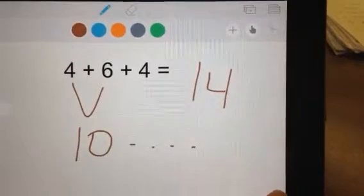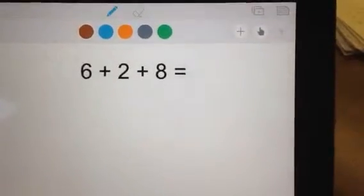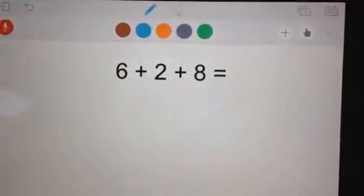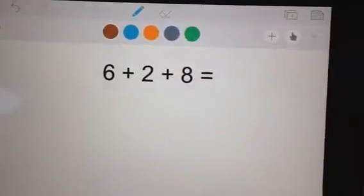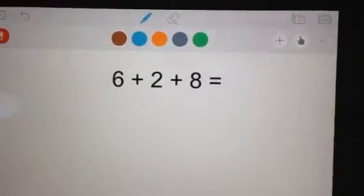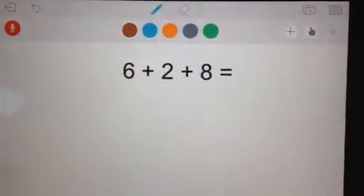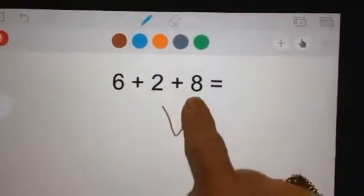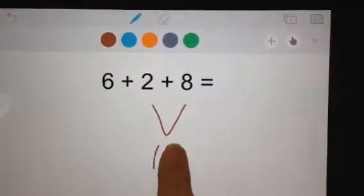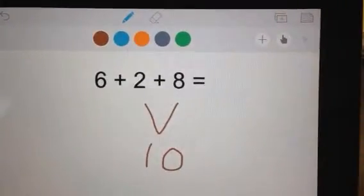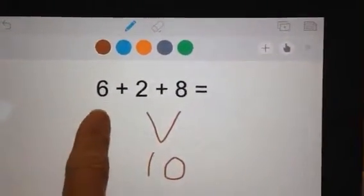So now we're going to do another one. I'm going to read the problem. 6 plus 2 plus 8 equals we don't know. I'm going to look for my partners of 10 and I see that 2 plus 8 equals 10. But I'm not done. I can't forget that other whole number over here. That's 6.